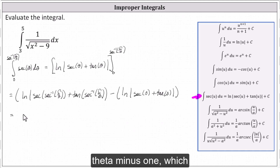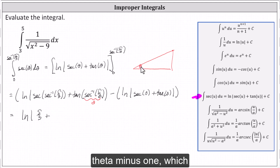Now we simplify. Secant of inverse secant of five-thirds simplifies to five-thirds, giving us natural log absolute value of five-thirds plus tangent of inverse secant five-thirds. To determine that tangent value, we use a right triangle. Letting inverse secant of five-thirds be the angle theta, we know the secant value is five-thirds, which is the ratio of the hypotenuse to the adjacent side. We have a three-four-five right triangle, so the opposite side has length four. The tangent of theta equals the ratio of the opposite side to the adjacent side, which gives us four-thirds.